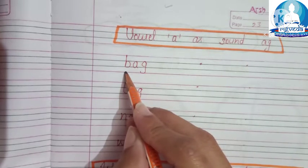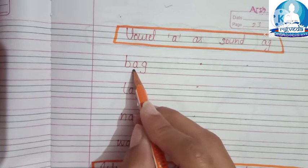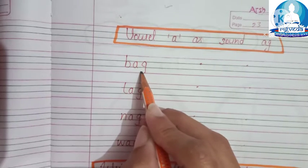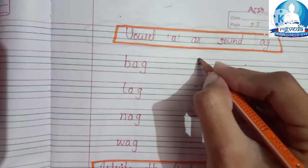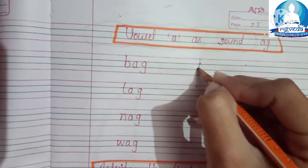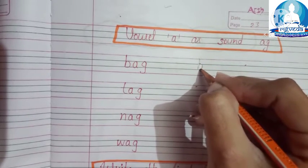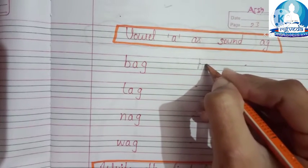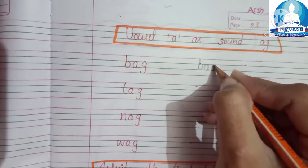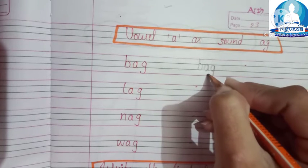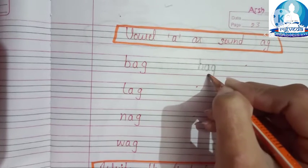First is bag. B, A, G, bag. Right here, B, A, G, bag.